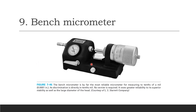The bench micrometer is by far the most reliable and also the most expensive micrometer. It measures to 0.0001 inches — ten times finer than a standard micrometer — and no vernier is required. Its greater reliability comes from its stability: it stands on its own stand completely, without being hand-held. It also features a very large diameter thimble. That concludes Chapter 7 on micrometer instruments.